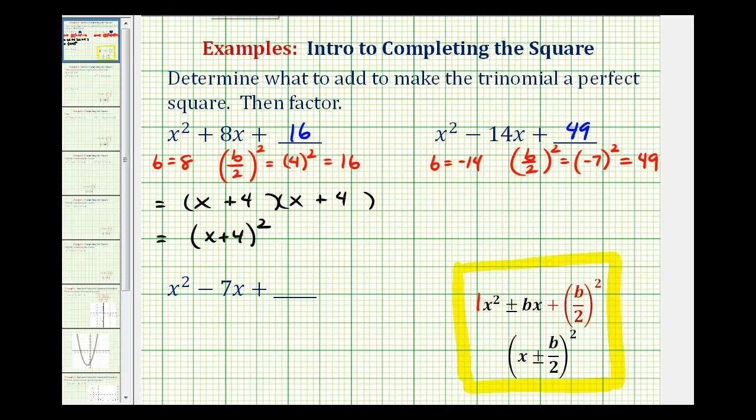So here we have plus 49. And again, let's go ahead and factor this to verify. Factors of x squared, x and x. Now we want the factors of positive 49 that have a sum of negative 14. So now we'll have two negative factors. It's going to be negative seven and negative seven. So we have minus seven here and minus seven here. Again, we have two equal factors, which verifies this is a perfect square trinomial. We have the quantity x minus seven squared.